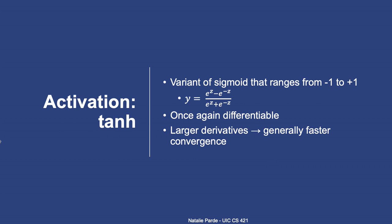The hyperbolic tangent function is often abbreviated as tanh, and it's a variant of the sigmoid function that ranges from negative one to positive one, as shown in the equation here. It's easily differentiable and generally reaches convergence more quickly than the sigmoid function.